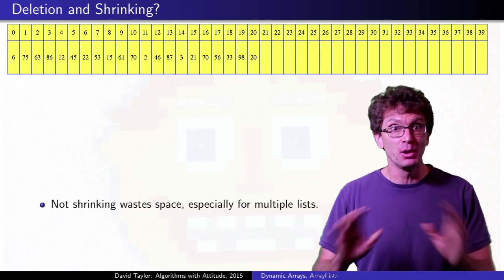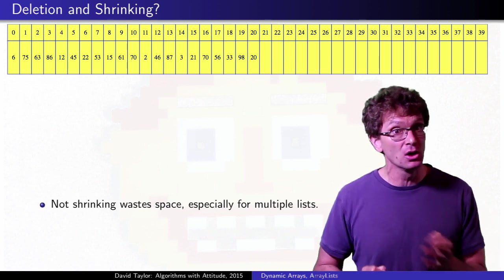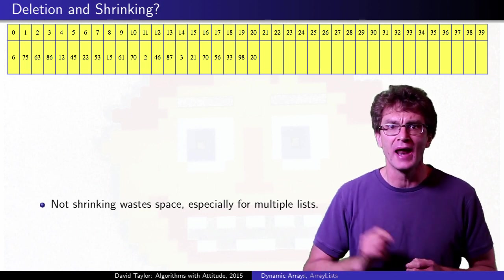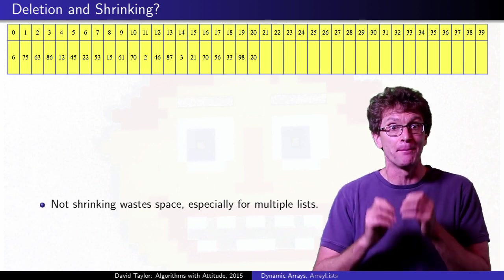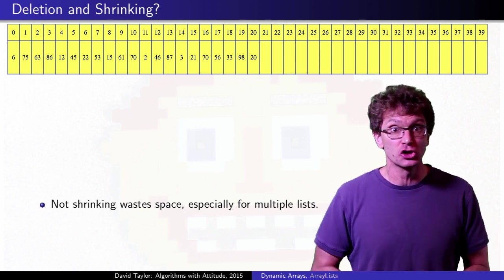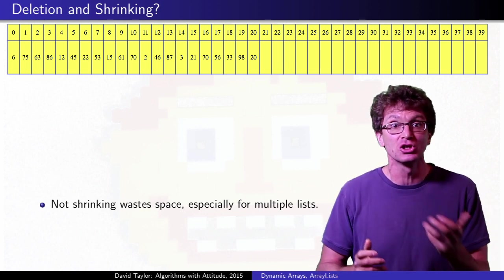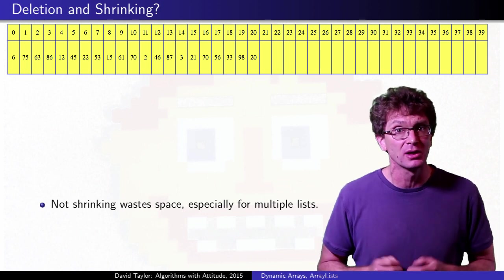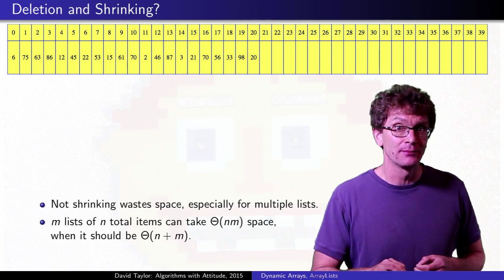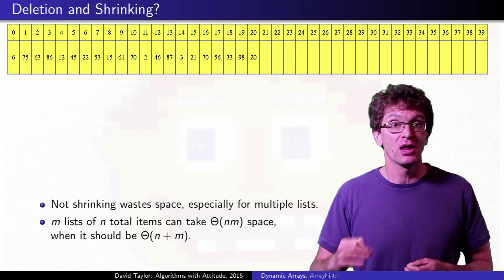Imagine that we are simulating a set of a billion items moving around between a thousand lists. On average, the lists have a million items each, but occasionally, maybe most of the items end up being in one list. When that happens, the list size will grow to hold a billion items. If different lists are crowded at different times, and you never shrink any of them, eventually you end up trying to allocate a thousand arrays of size a billion each, even though you only have a billion items. More generally, if you never shrink m lists holding n items total, you can take order n m space, instead of n plus m space.